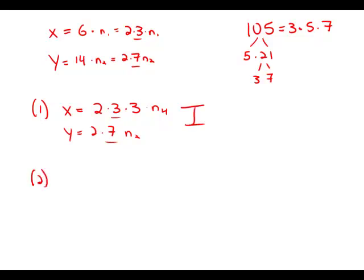Statement number 2. We forget about statement number 1, so we go back to x just being 2 times 3 times n1. Now we're told that y is a multiple of 25, so y, in addition to having the factors of 2 and 7, also has multiples of 5.